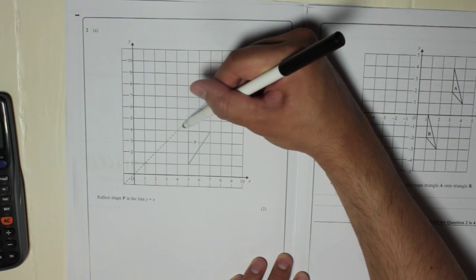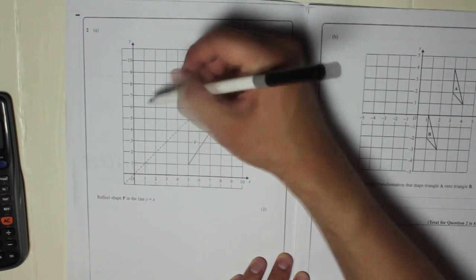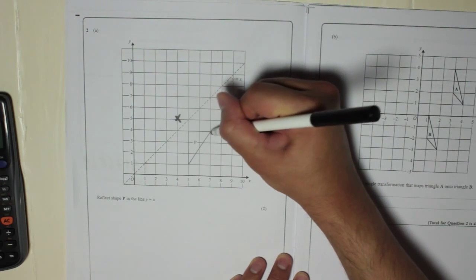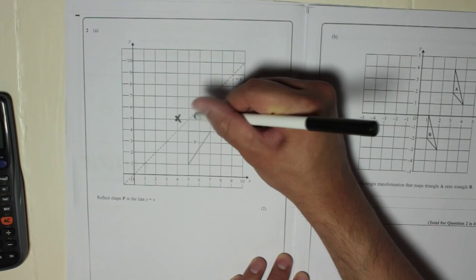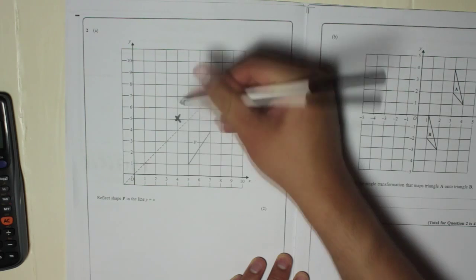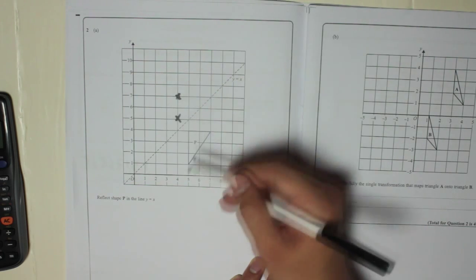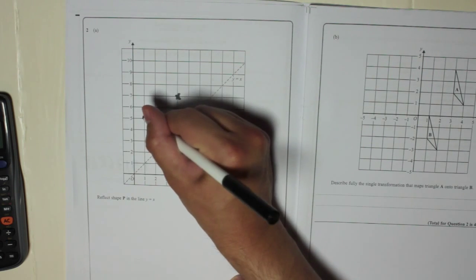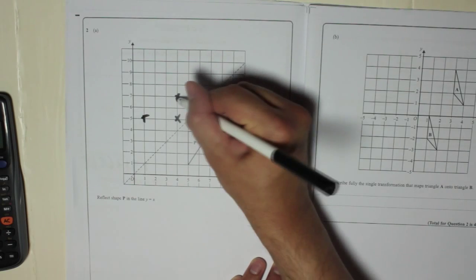So go half again and put across. So that's going to be the reflection of that point. This point here is one and a half, so go one and a half again, put across. And this point here is two diagonals from the line, so one, two again, put across.